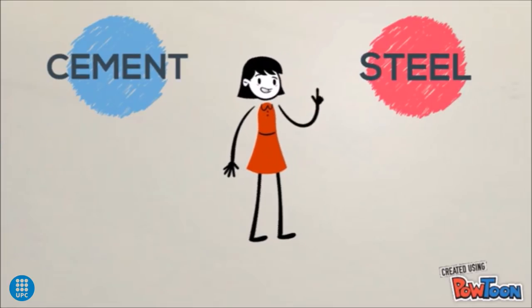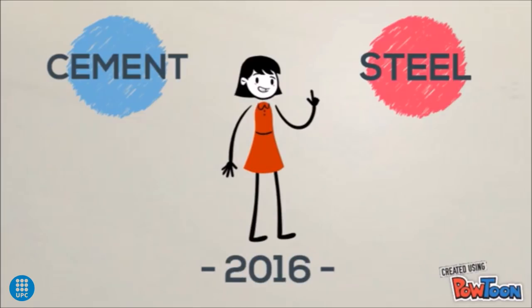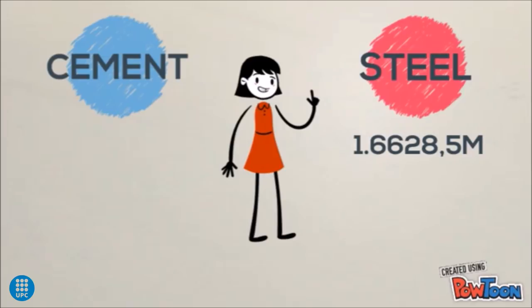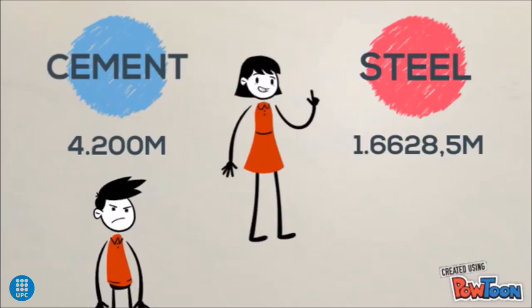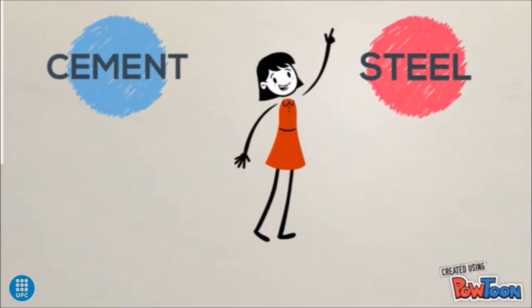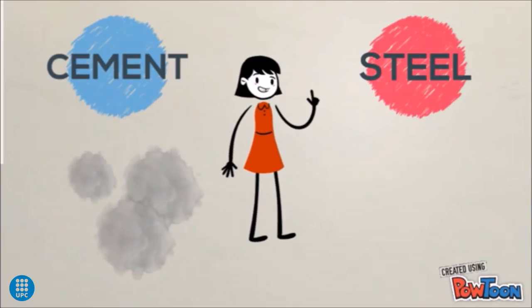For example, we know that in 2016, 1,628.5 million tons of steel were produced, while that same year, the production of cement was almost 4,200 million tons, more than twice the steel production. So we can deduce that nowadays, the footprint caused by cement is larger than the one of steel.